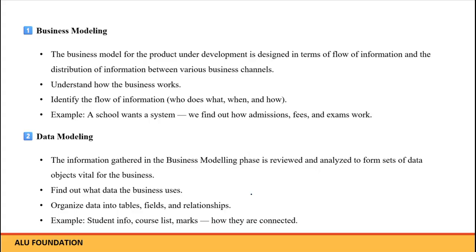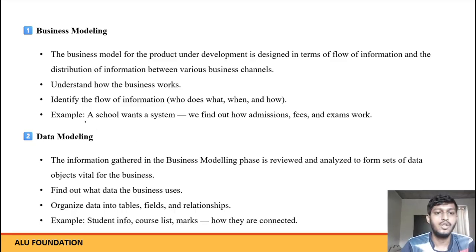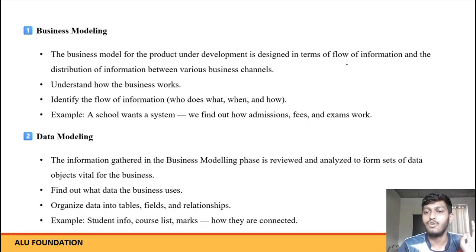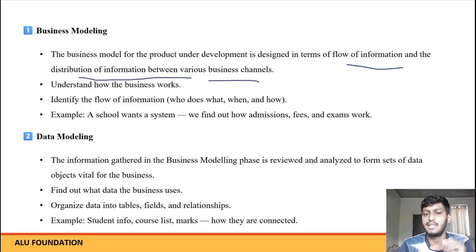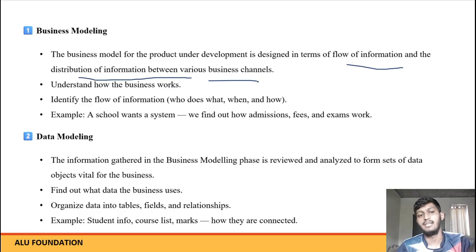Let's understand business modeling. Business modeling mein kya hota hai? Business ko samajhna padta hai. Hame ek application develop karna hai, us application ka kya business hai, woh humay pata hona chahiye, kaisi information flow hoti hai us business mein — woh humay pata karna hota hai. The business model for the product under development is designed in terms of flow of information and the distribution of information between various business channels. This phase is called the business modeling phase — understand how business works, identify the flow of information.